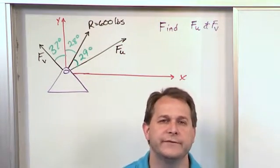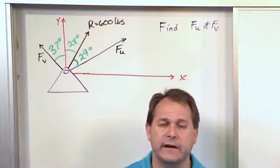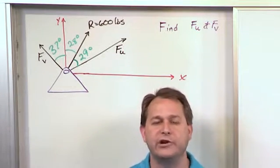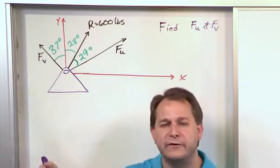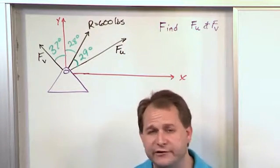So usually with vectors, we're trying to find the magnitude, which is the length of the thing or the strength of it, and the direction. And usually we express the direction in relation to the X-axis. But for both of these vectors, FU and V, we already know the direction to the X-axis.